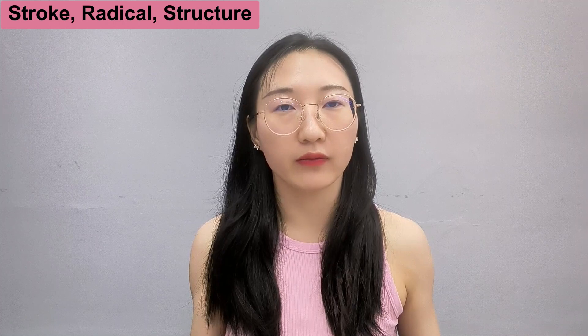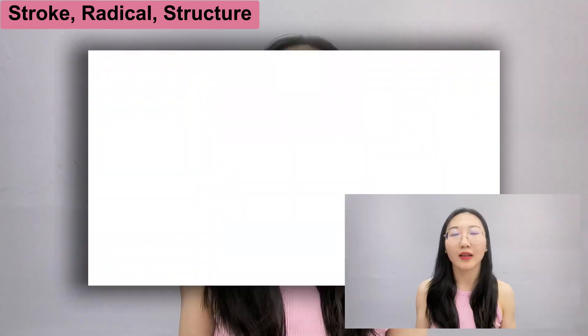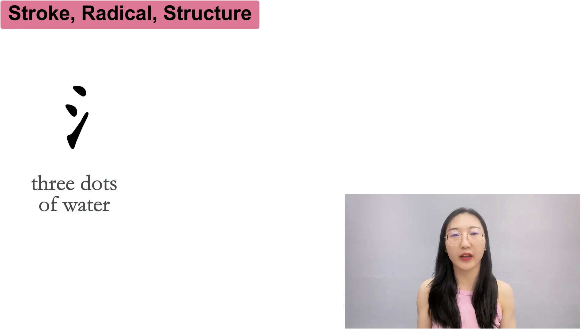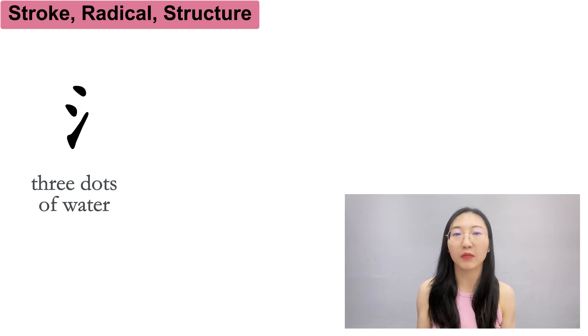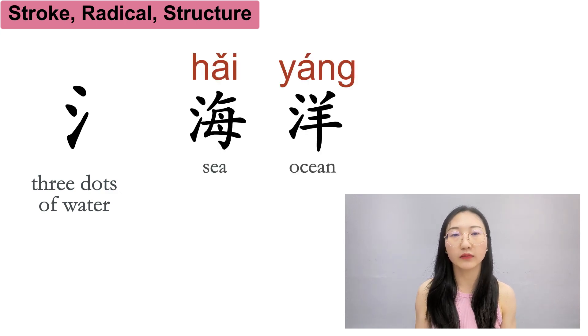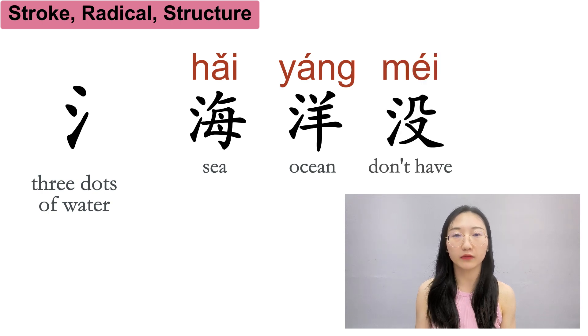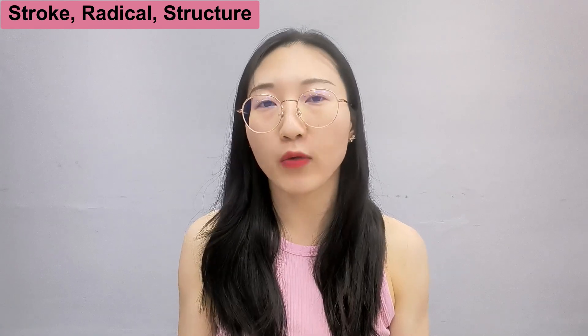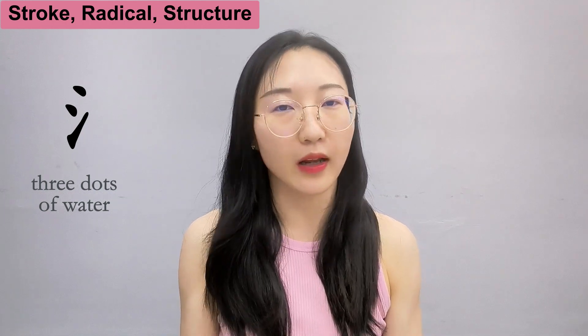Radical. A radical is like the pattern in which strokes are arranged. For example, one very common radical is 三点水, directly translated as 'three dots of water.' Pretty easy to understand literally, right? It's three dots. And many characters share this same radical, like 海, 洋, 没, 活, and so on. So if you've remembered the radical 三点水, the next time you see a new character with this radical, all the writing you need to learn is the remaining parts — and that's less work.